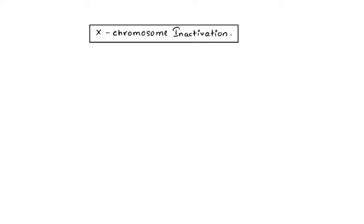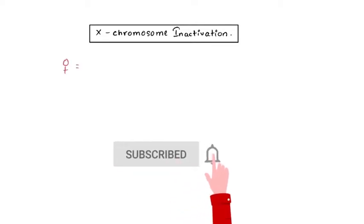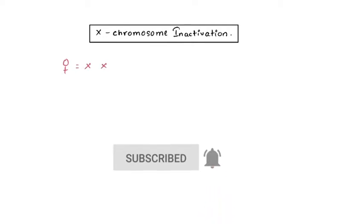To give you an overview, we all know that the human female has got two X chromosomes whereas the human male has got one X chromosome and the other Y chromosome.